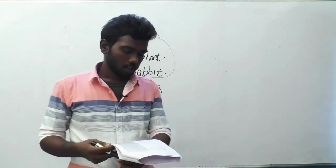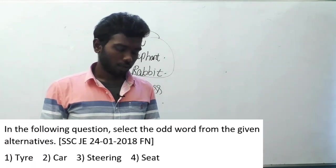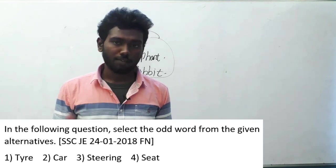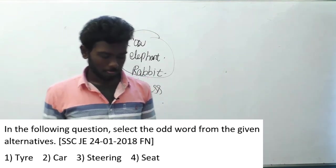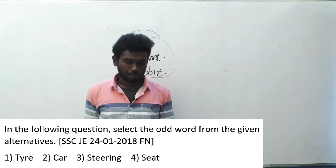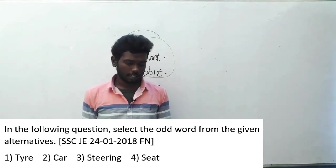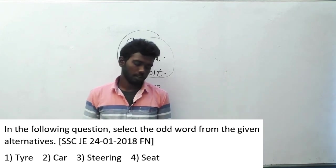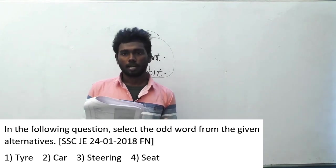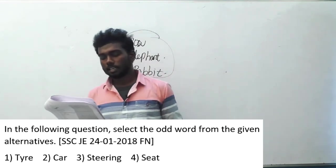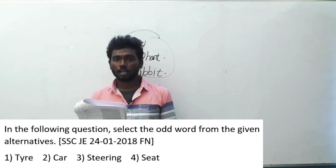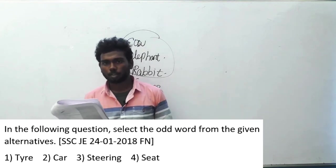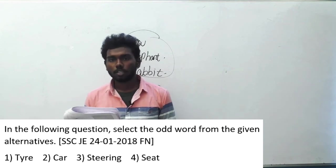Question number 168. In the following question, select the odd word from the given alternatives. This question was asked in SSC JE, 24th January 2018, forenoon session. Options are: option A tire, option B car, option C steering, option 4 seat. Tire, steering, and seat are components or parts of a car, whereas car is the whole object itself. So option B, car, is the correct answer.